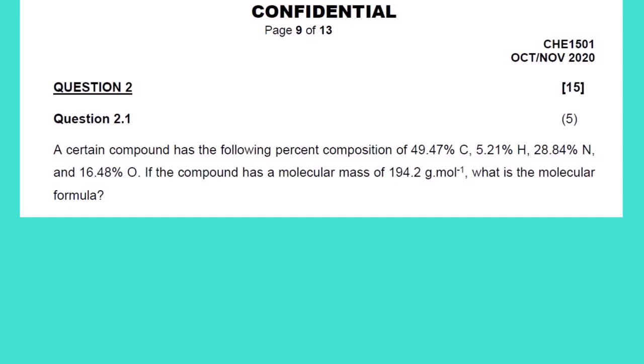The scenario says a certain compound has the following percentage composition: 49.47% carbon, 5.21% hydrogen, 28.84% nitrogen, and 16.48% oxygen. If the compound has a molecular mass of 194.2 grams per mole, what is the molecular formula? In this question we are given the mass percentage and also the molar mass of that particular compound.